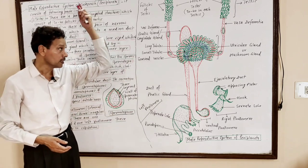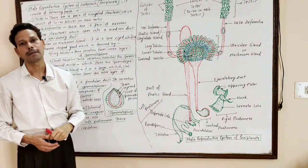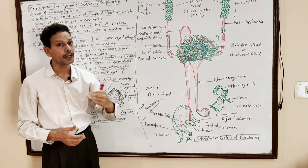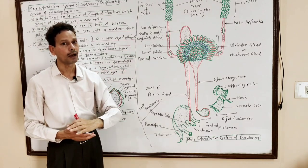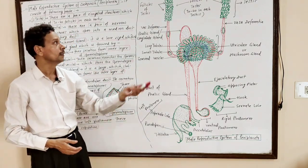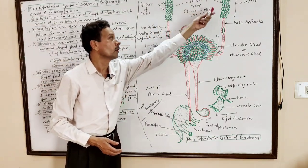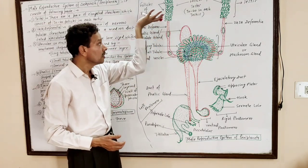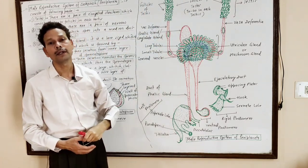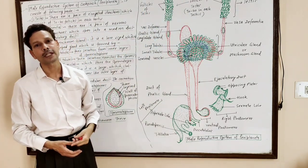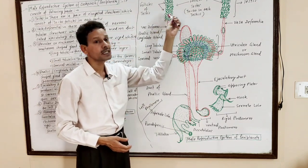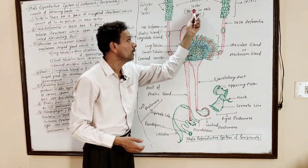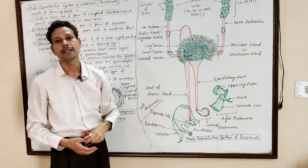In the male reproductive system of cockroach, Periplaneta americana, the following parts are involved. First, a pair of testes — these are fine, elongated, follicular structures, and each testis consists of about 30 to 40 follicles.